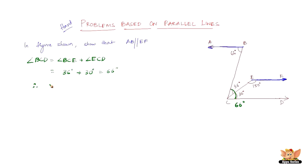Therefore angle BCD equals angle ABC — this is 66 degrees and this is 66 degrees, so these two are equal to each other. The lines AB and CD are intersected by the line BC such that angle ABC equals angle BCD. These two are alternate angles and they are equal, so we can establish that AB is parallel to CD.